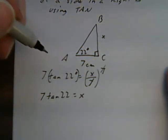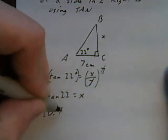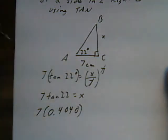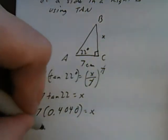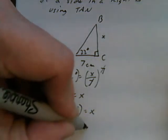If I plug 22 into my calculator to get the tan ratio, I'm going to get 7 times 0.4040. That's a rounded version of the tangent of 22, which is equal to X. If I multiply those out, I now get X is approximately equal to 2.8 centimeters.